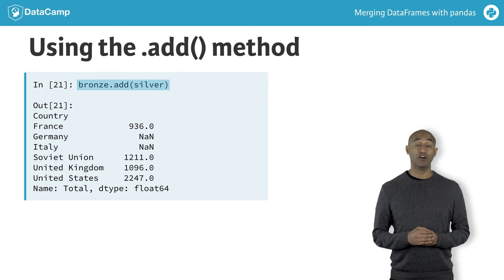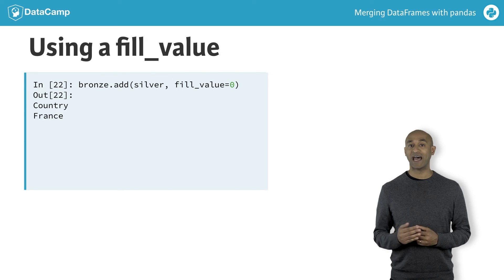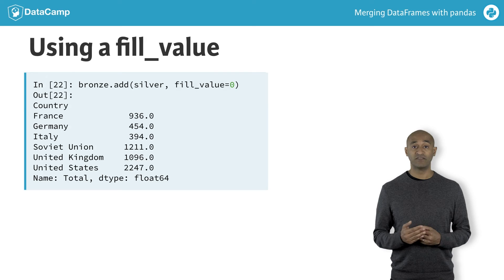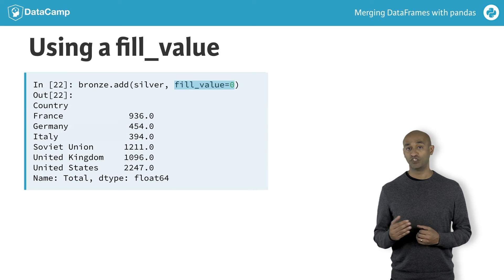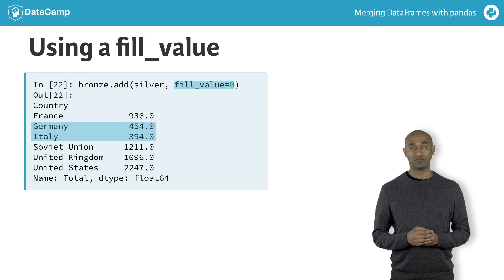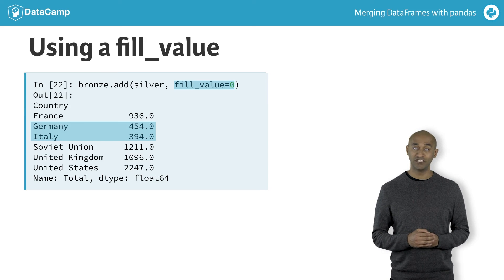We can get the same sum bronze plus silver with a method invocation using bronze.add(silver). The null values occur in the same places. The default fill value is NaN when rows fail to align. We can modify this behavior using the fill_value option of the add method. By specifying fill_value equals zero, the values of Germany and Italy are no longer null. Just as the divide method is more flexible than the slash operator, the add method is more flexible than the plus operator for addition.